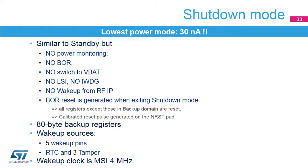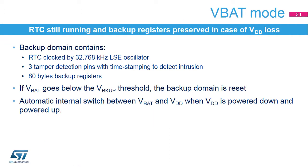Shutdown mode is the lowest power mode of the STM32WB with only 30 nanoamps at 1.8 volts. It is similar to standby mode but without any power monitoring: the brownout reset is disabled and the switch to VBAT is not supported. LSI is not available and consequently the independent watchdog is also not available. A brownout reset is generated when the device exits shutdown mode; all registers are reset except those in the backup domain, and a reset signal is generated on the pad. The 80-byte backup registers are retained. Wake-up sources are the five wake-up pins and the RTC, and the wake-up clock on exit is MSI at 4 MHz.